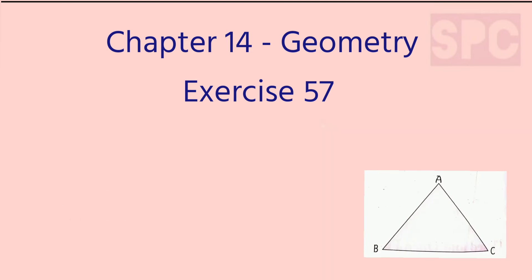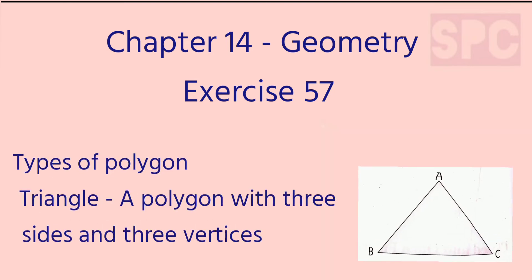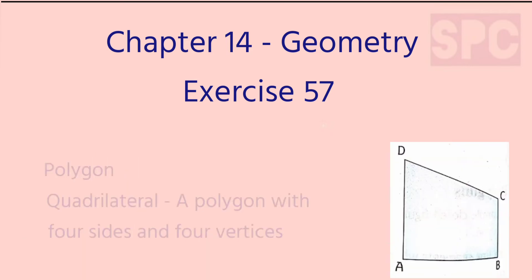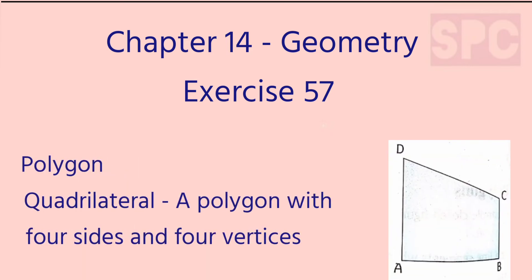Now let's understand different types of polygons. First is triangle — a polygon with three sides is called a triangle. It has three vertices: vertex A, vertex B, and vertex C.